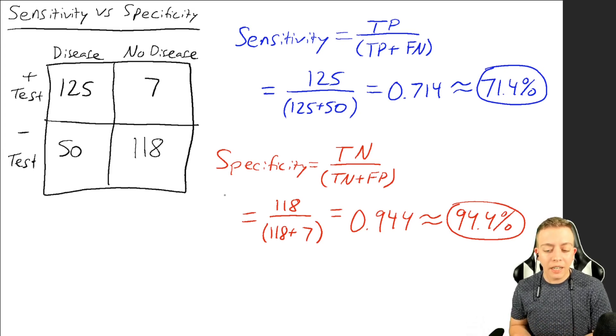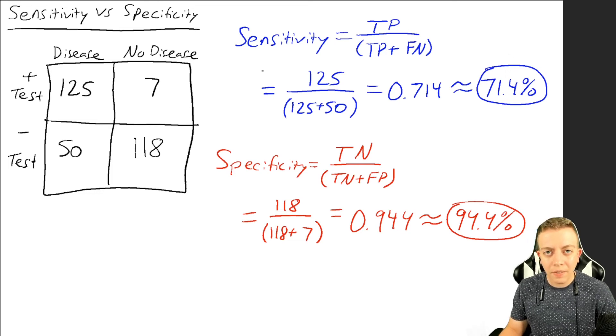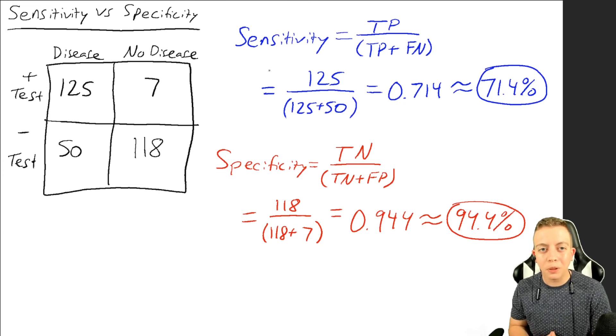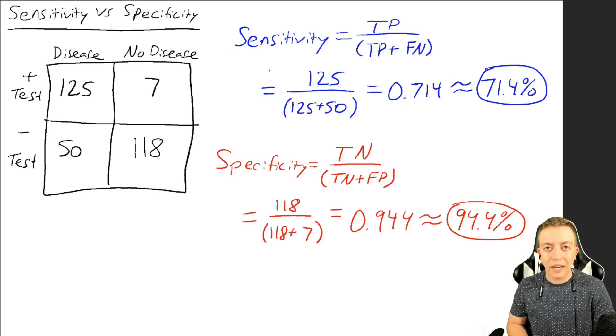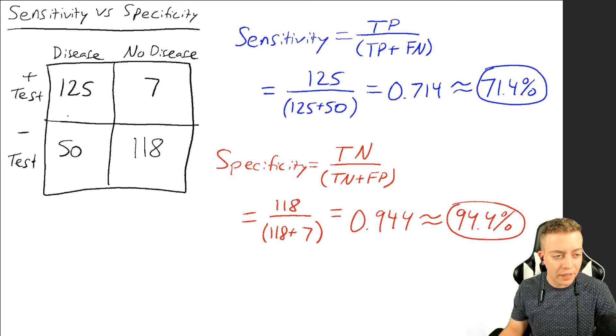But it's less sensitive. 71.4% sensitivity is pretty low for a sensitive test. That means it doesn't do a very good job at bringing in people who have the disease. We're going to get quite a few false negatives. We could see that here: 50 false negatives of people who had the disease. We can see that in our math.